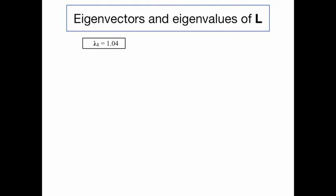The largest eigenvalue has a numerical value of about 1.04, and because it's larger than one, we already see that this will lead to an explosion — because at each subsequent step the population will be larger than in the previous step. The exact value is the growth rate that the model predicts, namely the growth rate that is constant once the population proportions have reached steady state.